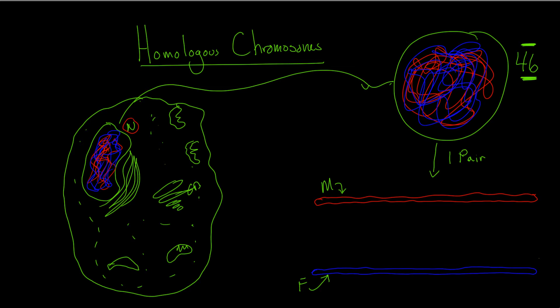Now if we were to look at the loci on these chromosomes, we would see that they have essentially the same loci, same locations on them. So what do I mean by that? Let's just say this was the chromosome for blood type.